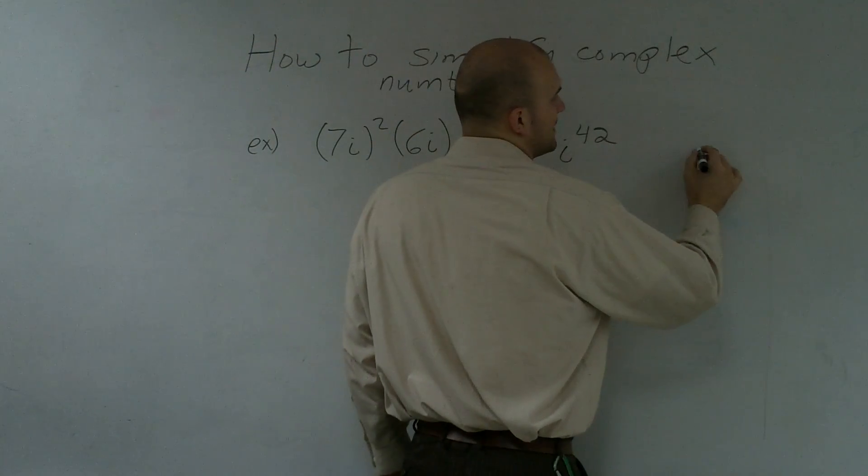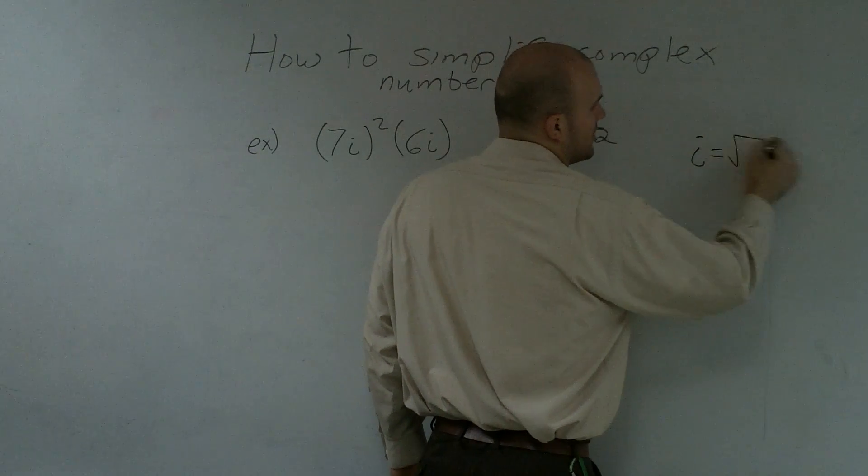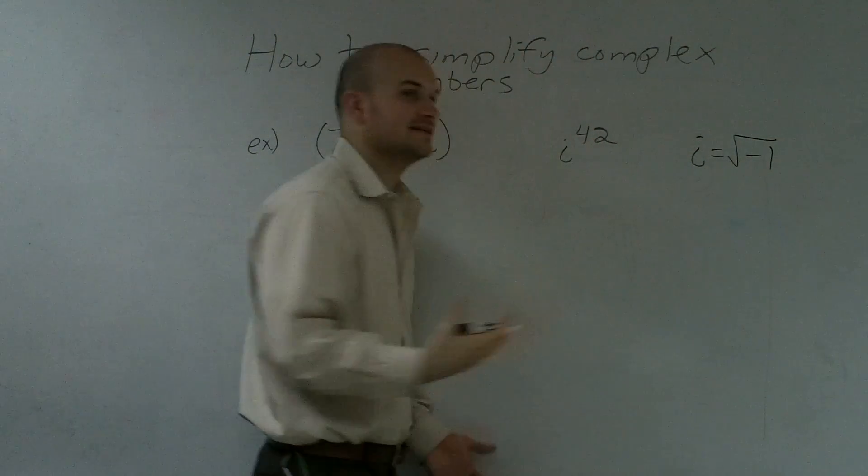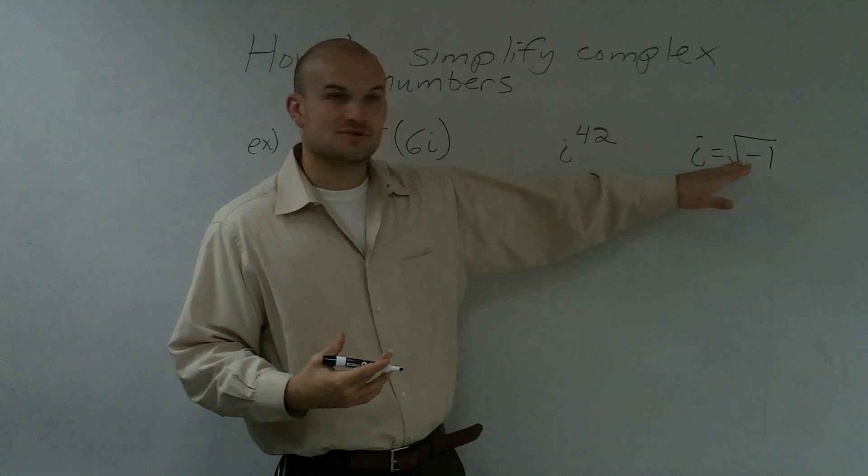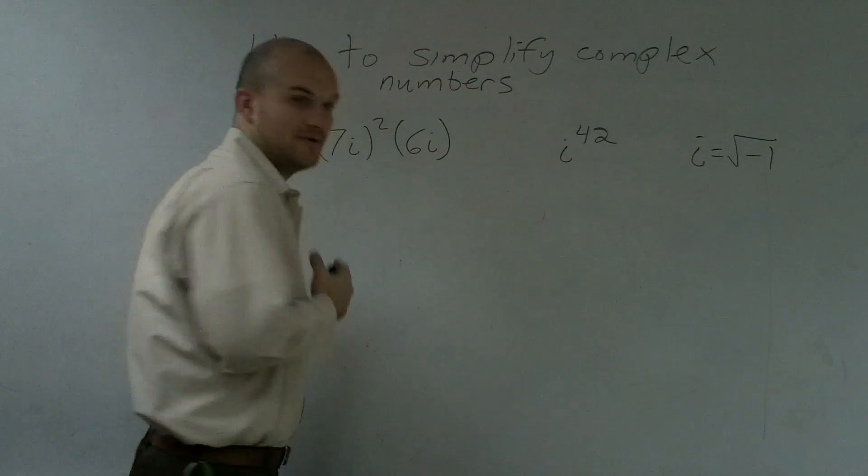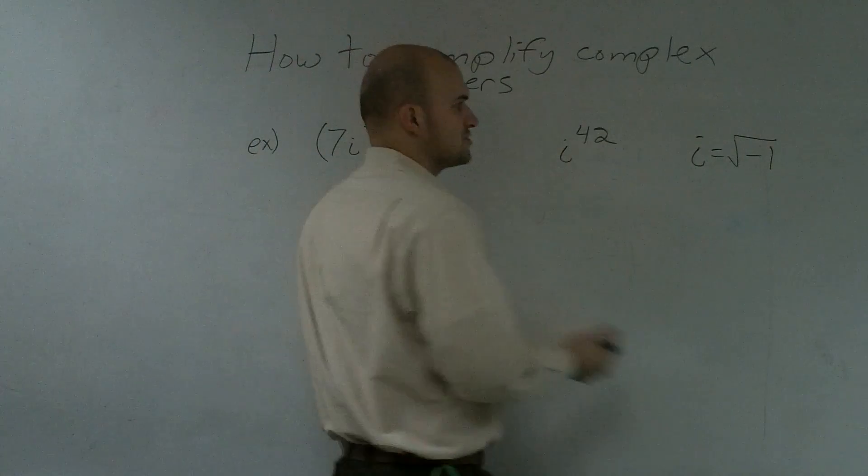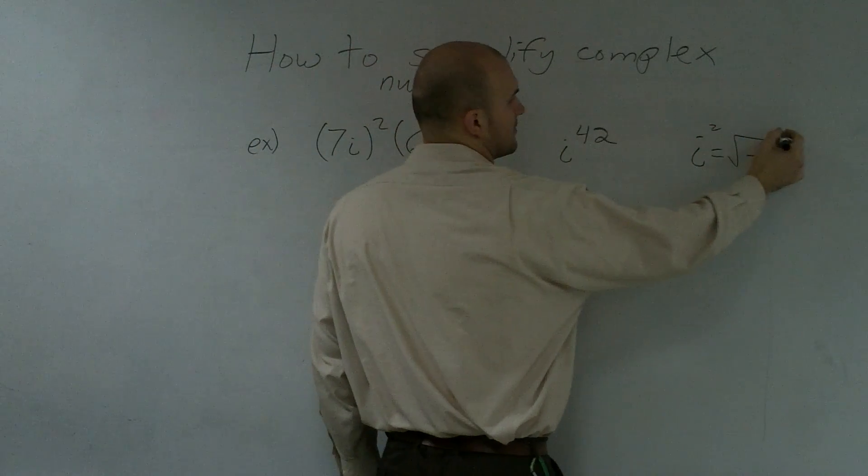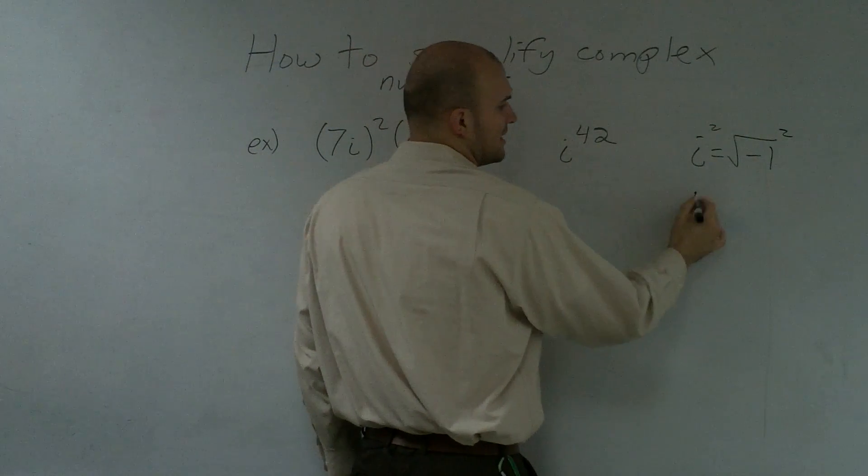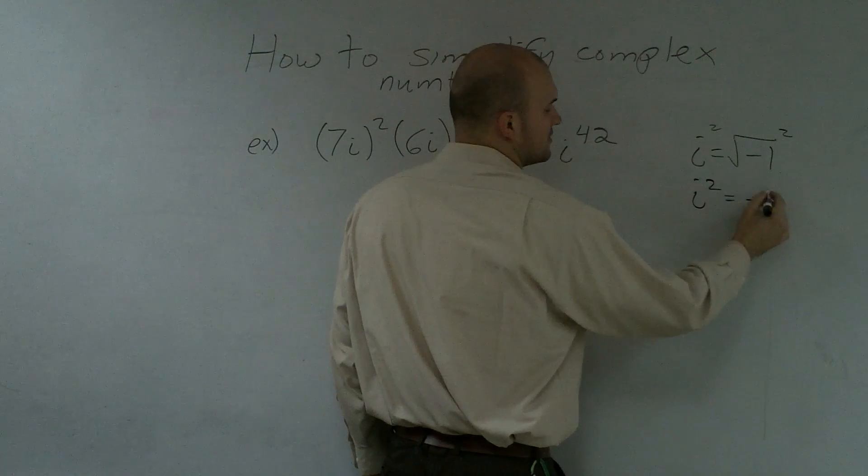What I showed you from the beginning is i represents the square root of negative 1. Because you can't take the square root of a negative number, we're going to have i equals square root of negative 1. Now, if I was to square both sides, the square root would cancel out, and I'd get i squared equals negative 1.